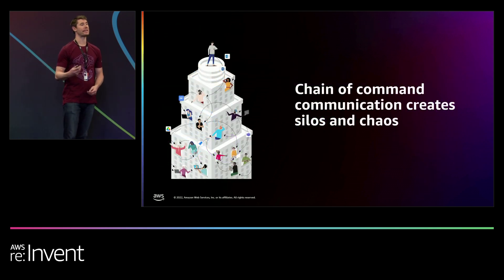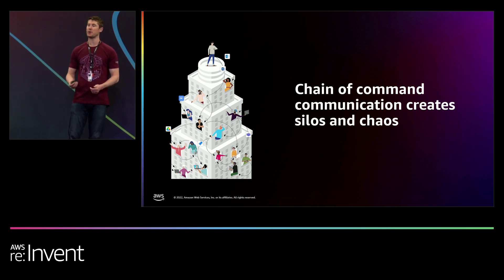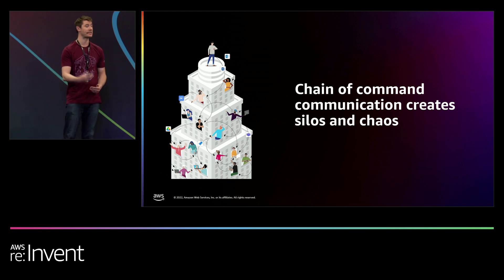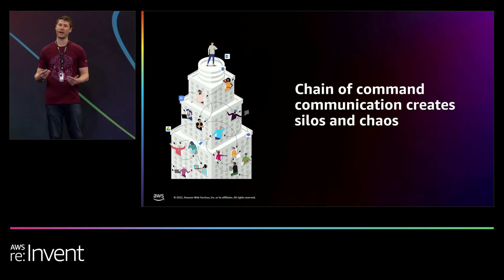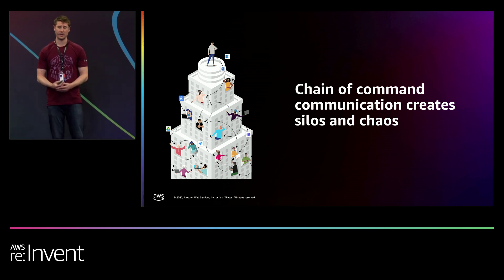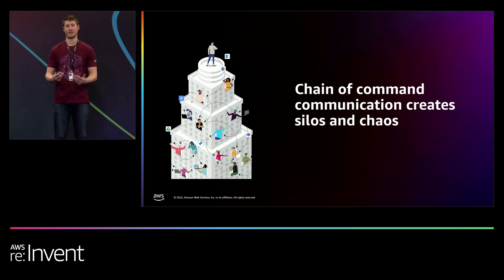Even though our team structures and tools have evolved to support Agile and DevOps, communication and collaboration are two things that haven't quite caught up in the same way. If you're releasing software every two weeks or weekly or even on a daily basis, this chain-of-command style that we've been used to in the past just doesn't work. If you're communicating via email or even simple chat, you're essentially trying to do Agile development but with waterfall communications.